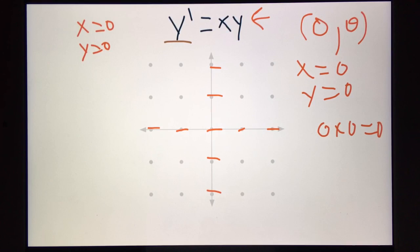After that, you can move on to more points, such as 1, 1, which if we plug it into this, you would get a slope of 1. It's simply 1 times 1. At 1, 2, which would give us a slope of 2, because it's 1 times 2. And so on.